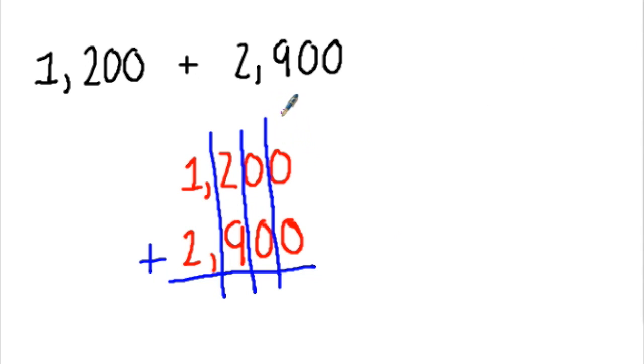So I'll start with the ones place. Zero ones plus zero ones is still zero ones.